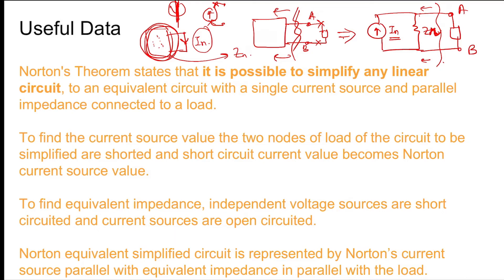This gives you Z_N, which is connected in parallel with the Norton current source. These two nodes are then connected back with the load, which will represent and have the characteristics of the exact same circuit. This makes it easy to find the load current and load voltage.